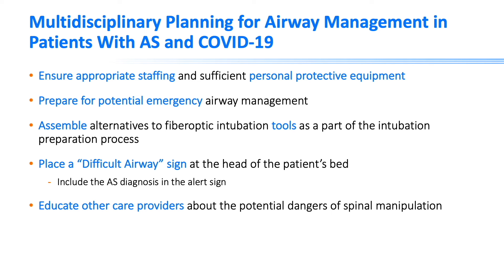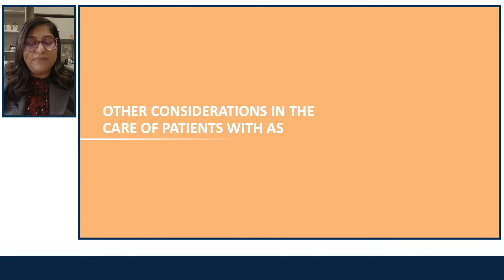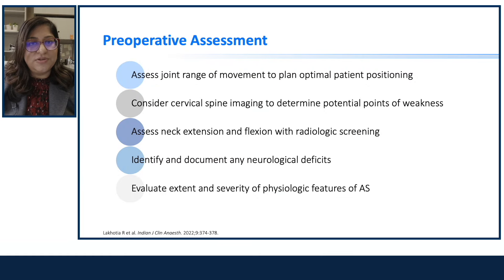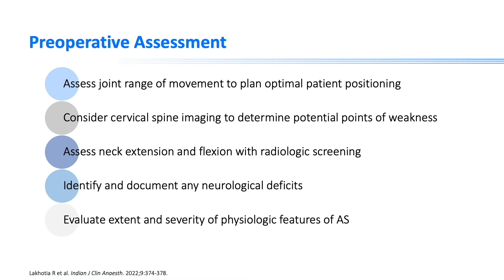Special precautions must always be taken for patients with AS. Preoperative assessment should include assessing the range of motion of the joints, considering C-spine imaging to determine potential points of weakness, assessing extension and flexion with radiologic screening, and identifying and documenting any pre-existing neurological deficits. Evaluate the extent and severity of AS features and develop an individualized plan.